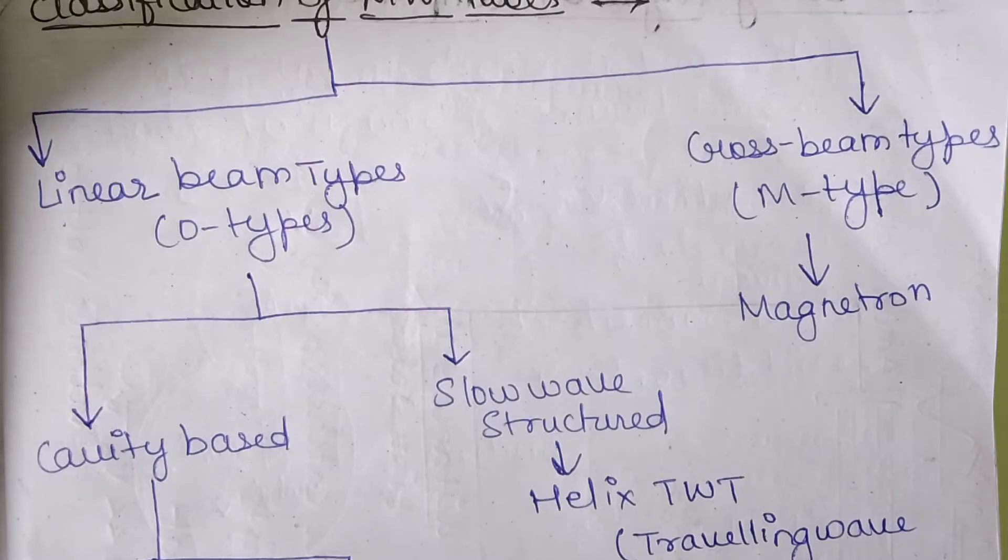So firstly, what is microwave tube? Microwave tubes are constructed to overcome the limitations of the conventional tubes. They make use of the transit time effect. That is, large transit time is required for their operation. The basic principle operation of the microwave tube involves the transfer of power from a DC voltage source to AC voltage by means of the current density modulated electron beam.